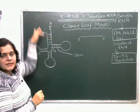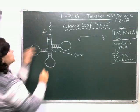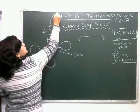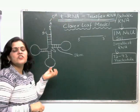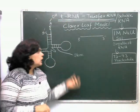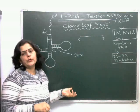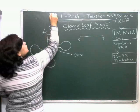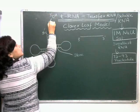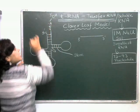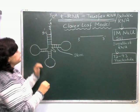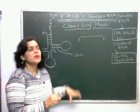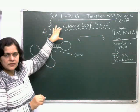At the 3' end, there is a functional group OH, which is a characteristic feature of the 3' end — every polynucleotide chain has an OH group at its 3' end. The bases here are exposed. The 3' end is the site where amino acids bind; amino acids come and bind here.